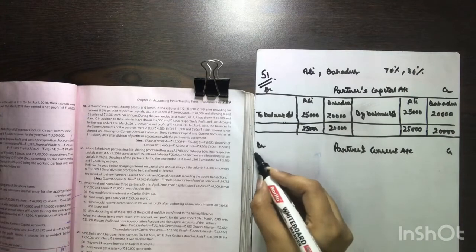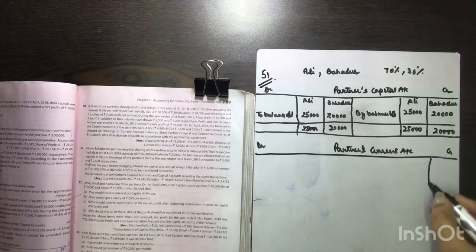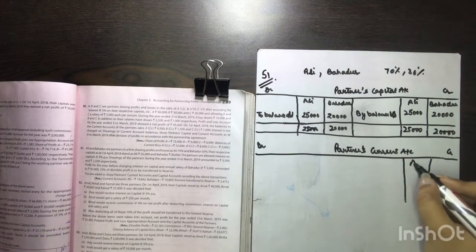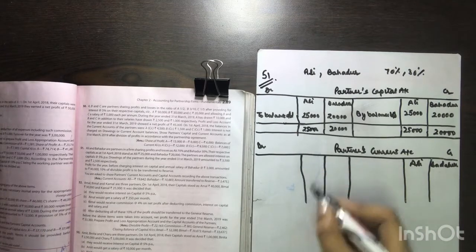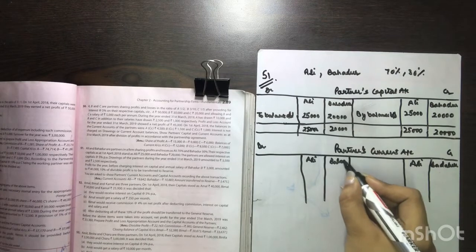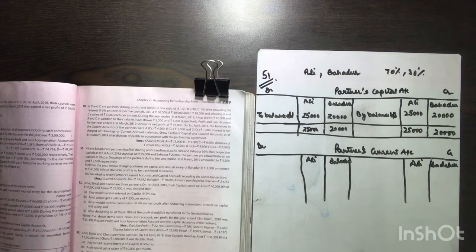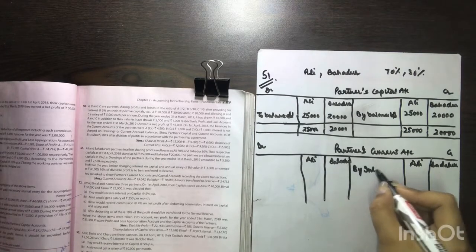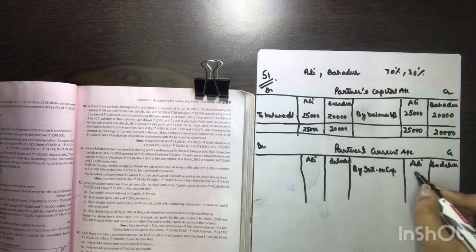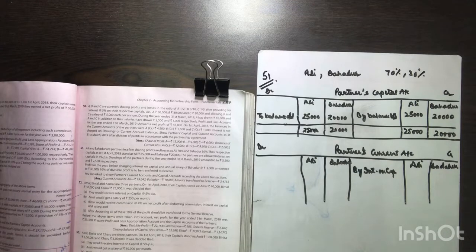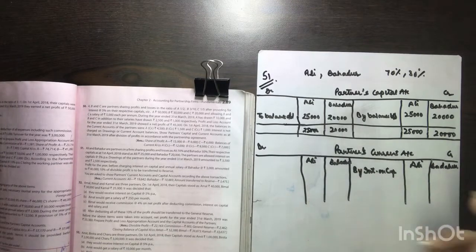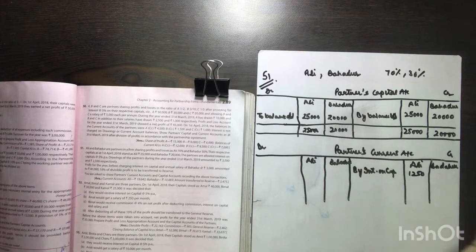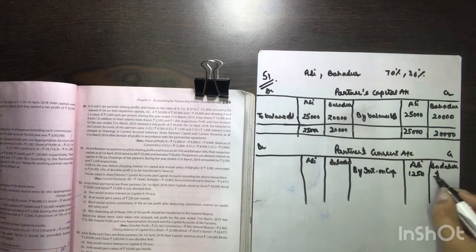Then we will make partners' current account — credit, debit. I am doing this question so that your confusion regarding partners' capital and current account is removed. So we have Ali and Bahadur. By interest on capital: Ali's capital is 25,000, and 25,000 at 5% interest gives 1,250. Bahadur's capital is 20,000, and 20,000 at 5% gives 1,000. Then Bahadur will be given salary — by salary account — 3,000.